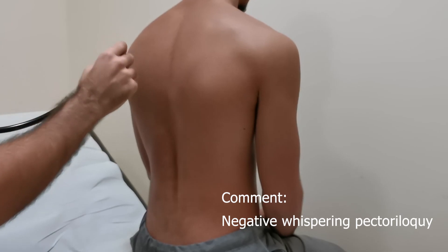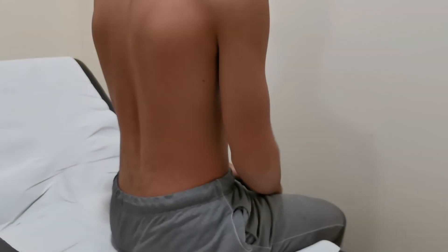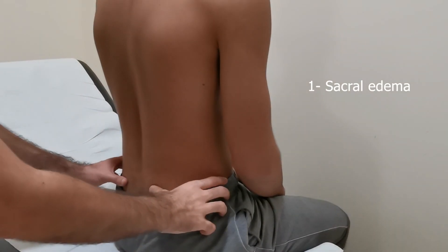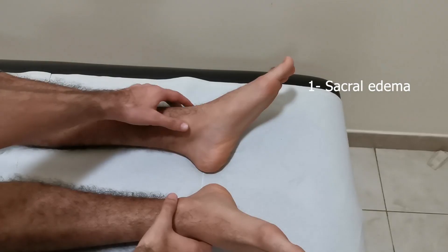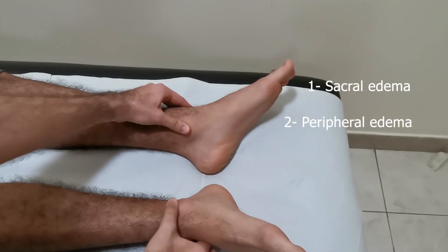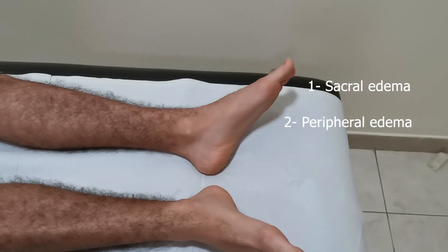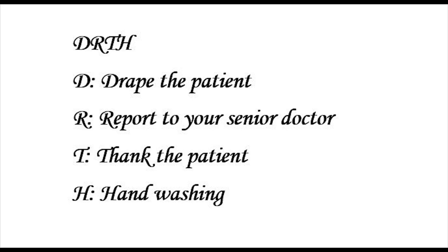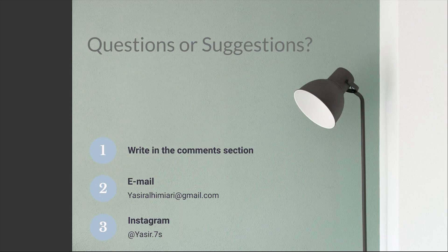Now to end our examination, we should check for sacral edema, peripheral edema, and assess jugular venous pressure, which can all be signs of right heart failure secondary to COPD. Then DRTH. Thanks for watching.